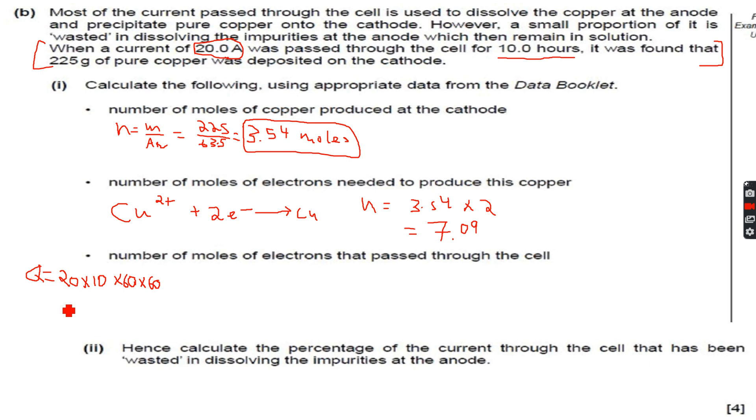Now when I do this on my calculator, I get 720,000 Coulombs. So 720,000 Coulombs. Now this is the total charge passed, and I know that the number of moles of electrons is equal to Q over F, where Q is 720,000 in this case and F is 96,500 as we know it.